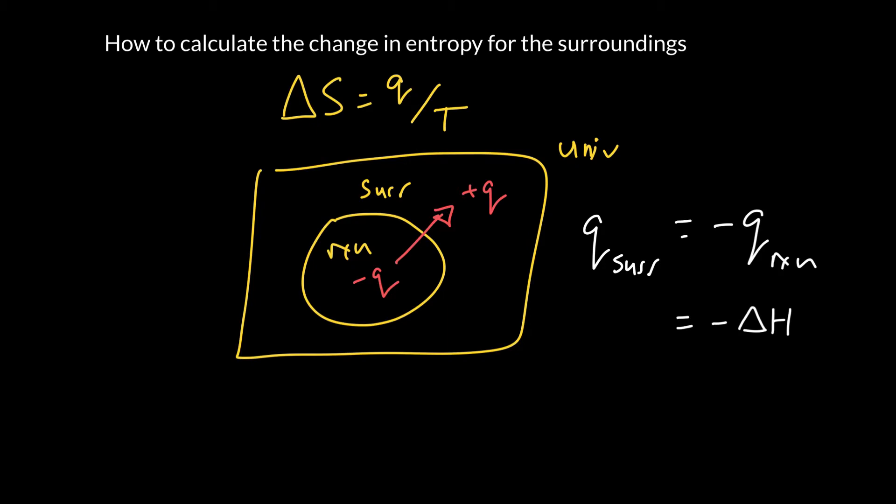So we can put it all together and say delta S for the surroundings now is equal to Q surroundings over the temperature of the surroundings. We're going to assume that the system and the surroundings are all at the same temperature. And if they're not, we're just going to wait until they get there. And now we can say that is equal to minus delta H over T.